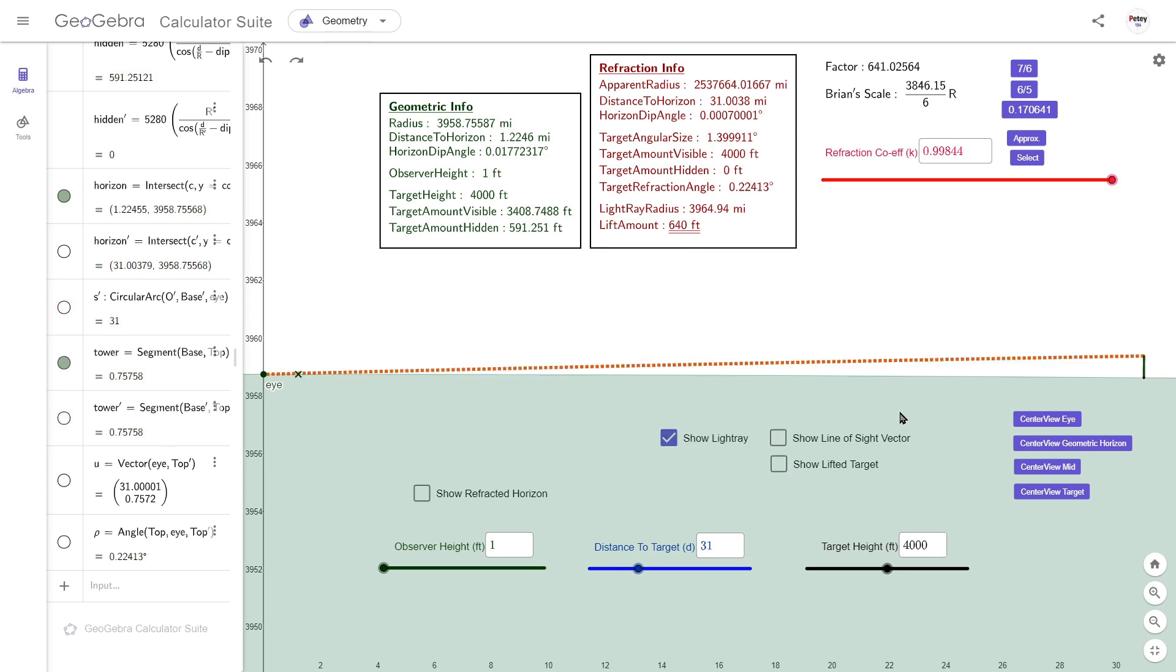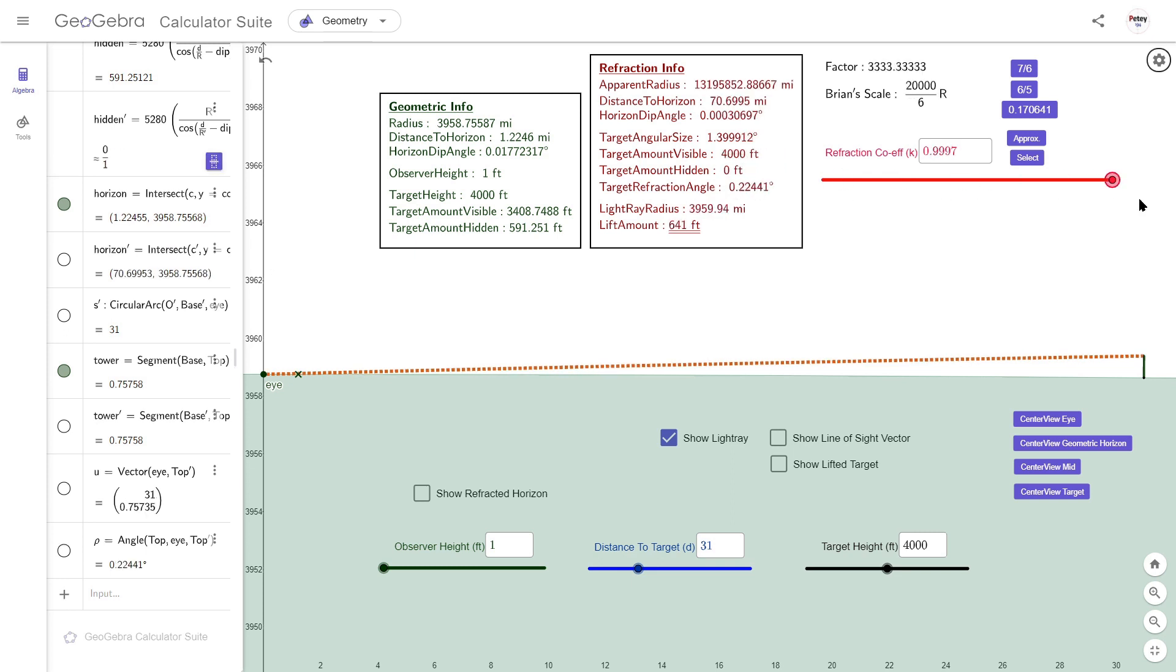I can control how much this light ray bends by using this slider. I have it ranging from 0, where the radius is infinite, i.e. a straight line, to just under 1. The refraction coefficient is the ratio of the Earth's radius to that of the light ray's radius.